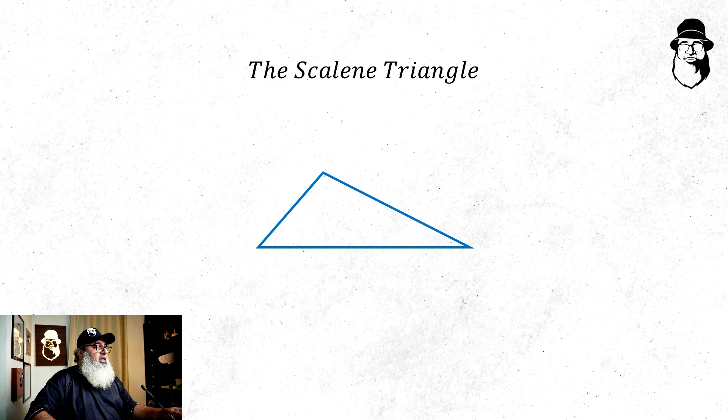If a triangle is not equilateral or isosceles, it is called scalene. So a triangle in which no sides are equal is a scalene triangle like this one here.